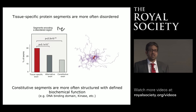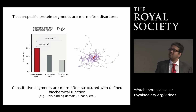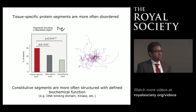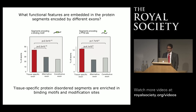Looking at the structural properties of these protein-coding segments, we found that tissue-specific exons tend to have a much higher amount of disordered regions compared to constitutive exons, which more often tend to have structured domains defined by chemical properties. In terms of the features embedded in these disordered regions—such as linear motifs or post-translational modification sites—we again noticed that tissue-specific protein segments are enriched to contain these binding motifs and modification sites compared to constitutive exons.